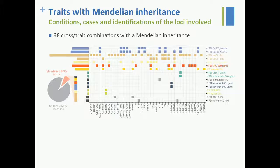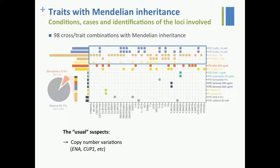We focused on the Mendelian cases — 98 cross-trait combinations with Mendelian inheritance — and we wanted to know which locus is involved. We had all the strains showing Mendelian inheritance with sigma across different conditions: copper sulfate, sodium chloride, and so on. Using bulk segregation analysis followed by whole genome sequencing, we identified the regions involved. For copper sulfate and sodium chloride, we mapped the usual suspects — copy number variations — which wasn't very exciting since we already knew they are involved in these kinds of Mendelian traits.